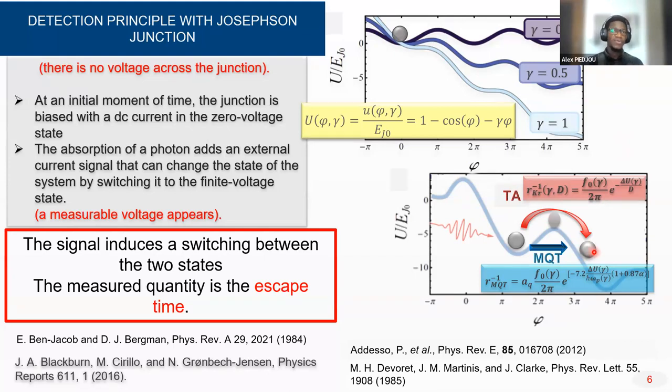Basically, we suppose at the initial moment of time, the junction is biased with a DC current in the zero voltage state. The absorption of a photon, as I said, I suppose that each absorbed photon produces an external current signal that can change the state of the system by switching from the zero voltage state to the finite voltage state. This is basically how the detection of the photon is achieved.